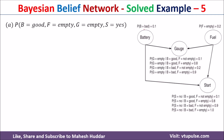The probability of battery being bad is 0.1, so the probability of battery being good is 1 minus 0.1, which is 0.9. Similarly, the probability of fuel being empty is 0.2, and the probability of fuel being not empty is 1 minus 0.2, that is 0.8.